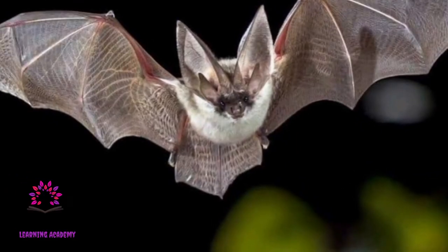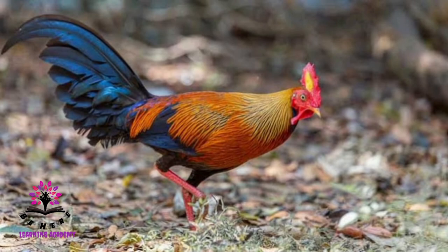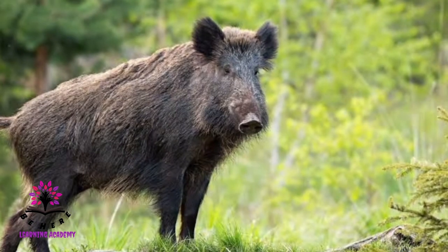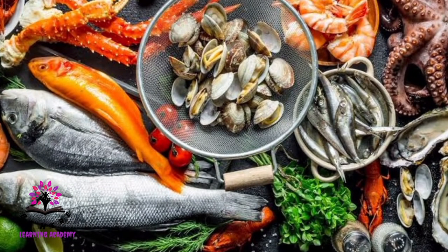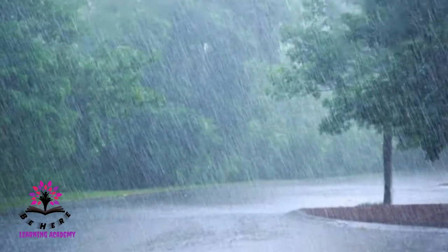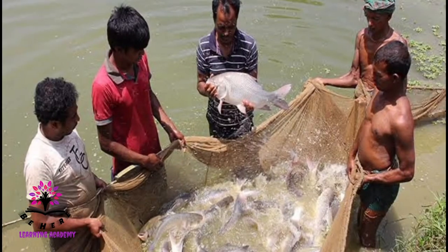Let us learn about a few wild animals found in this region. Land animals such as bat, jungle fowl, wild boar, and woodpecker, and aquatic animals such as prawns, sea crab, fishes, and starfish are found here. The Western Coastal Region is a heavy rainfall area.